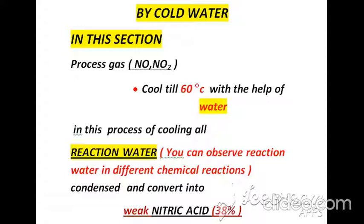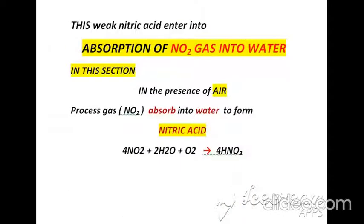The third cooling method uses cold water. In this section, process gases — nitric oxide and nitrogen dioxide — are cooled to 60°C. Reaction water condenses to form a weak nitric acid of concentration 38%, which then enters the next section, the absorber.